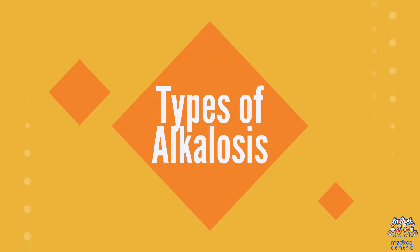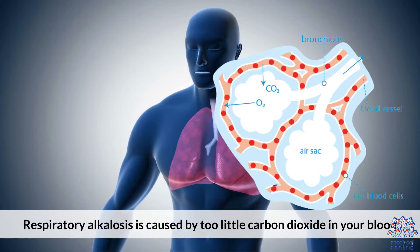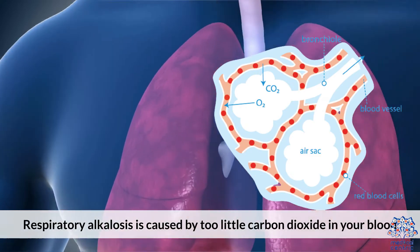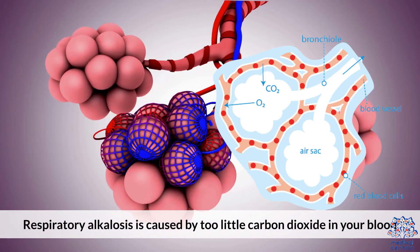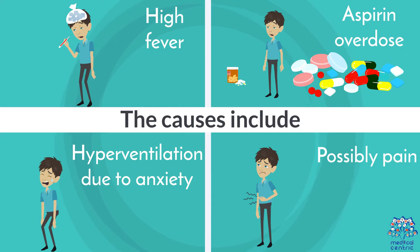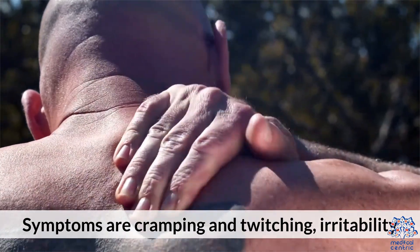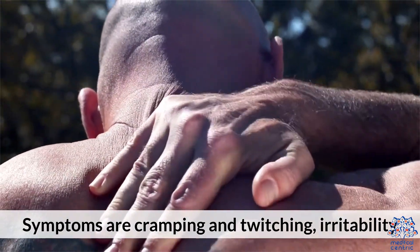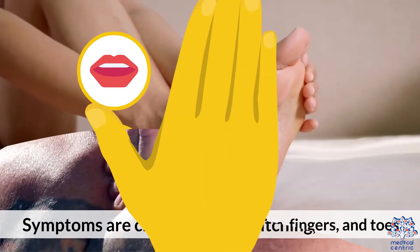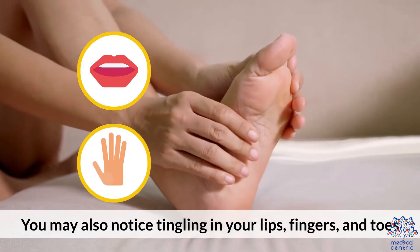Types of alkalosis: Respiratory alkalosis. Respiratory alkalosis is caused by too little carbon dioxide in your blood. The causes include high fever, aspirin overdose, hyperventilation due to anxiety, and possibly pain. Symptoms are cramping, twitching, and irritability. You may also notice tingling in your lips, fingers, and toes.